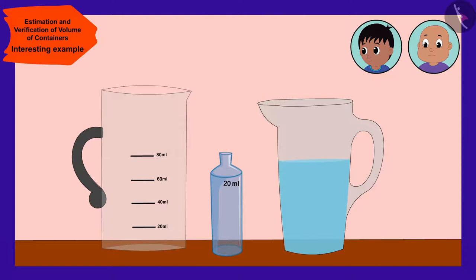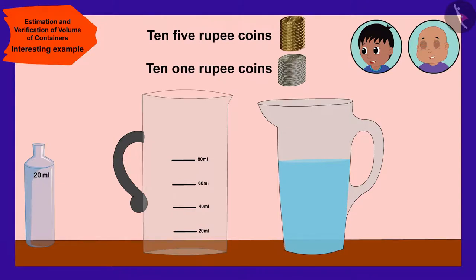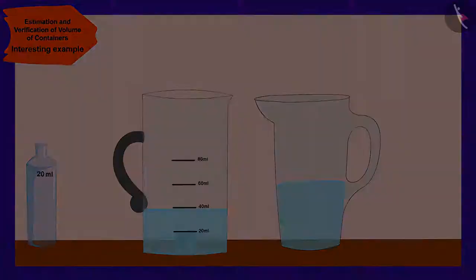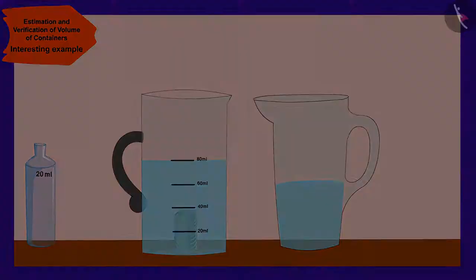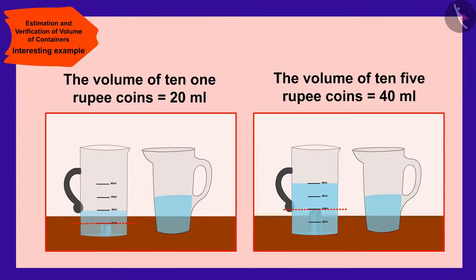Now, we can use it to find the volume of the coins. Wow, Raju, this is a wonderful technique! Let us find out the volume of 10 one-rupee and 10 five-rupee coins. Raju and Bablu used the measuring jug made by them. They found that the volume of 10 one-rupee coins is 20 ml, and the volume of 10 five-rupee coins is 40 ml.